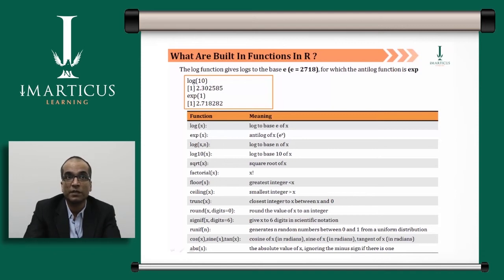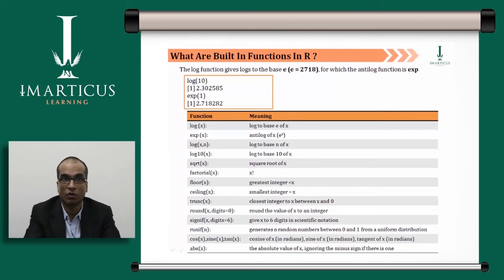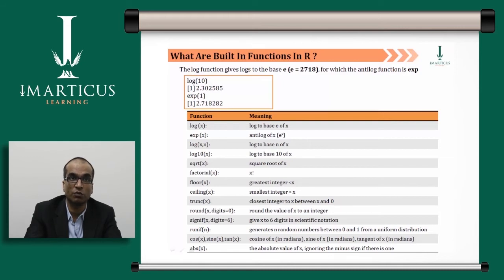The function log(x, n) allows you to specify the base: if you want base 2, set n=2; for base 10, set n=10. You also have log10(x) for log base 10. For square roots, use sqrt(x) — pass a vector and it computes the square root of each element. The factorial(x) function computes the factorial, and floor(x) rounds down — for example, floor(2.4) returns 2.